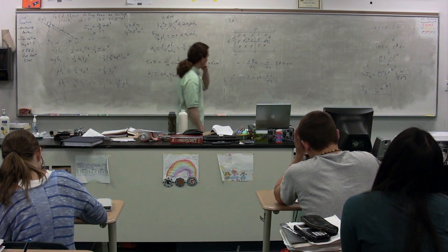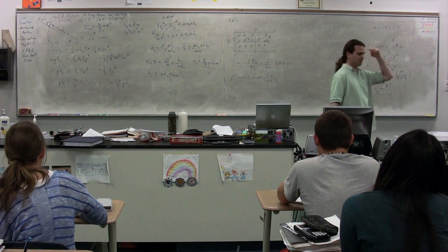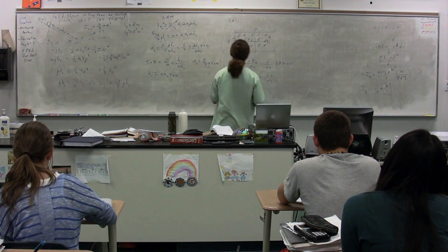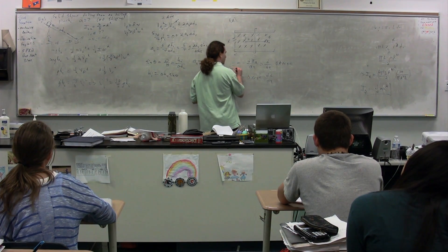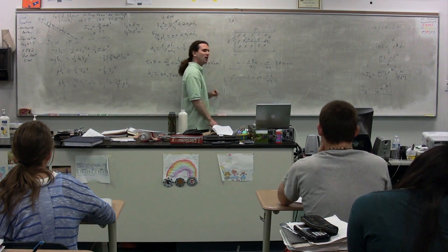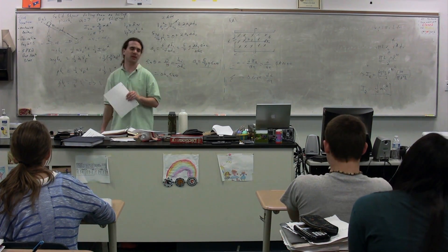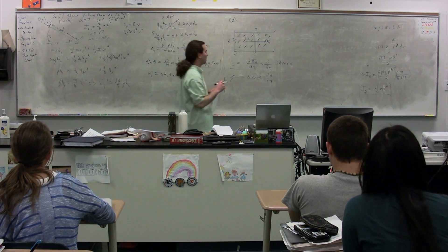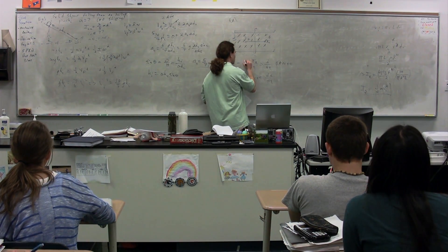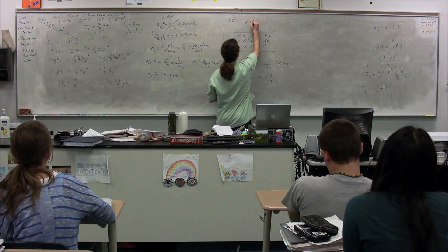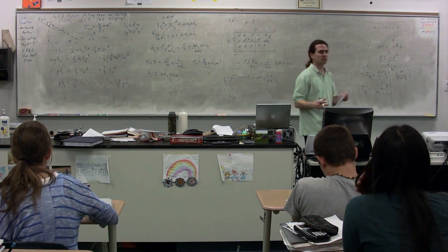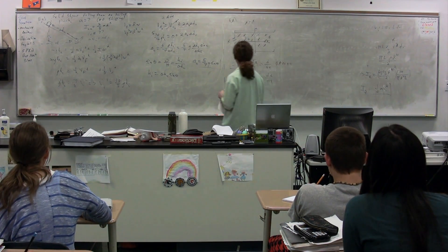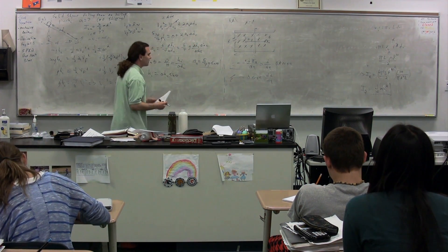I do want to highlight because this mistake was made several times on the test. This right here is the equation on your equation sheet for Faraday's law of induction. What is missing from that equation? The number of turns. I'm going to put the number of turns just for yucks here. The number of turns in this particular case is 1, which is why it doesn't really matter. But it was forgotten on several occasions on your test. So please be very careful of that.